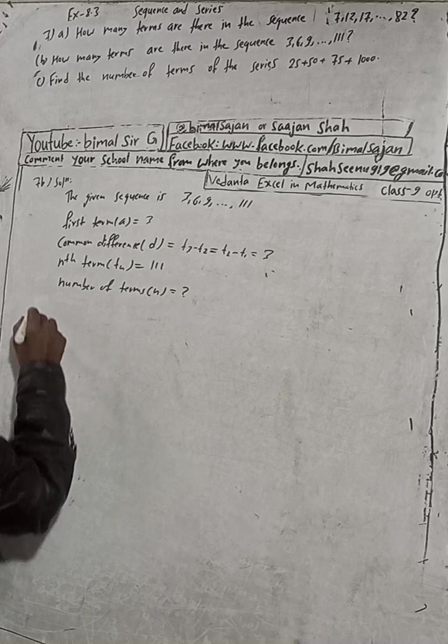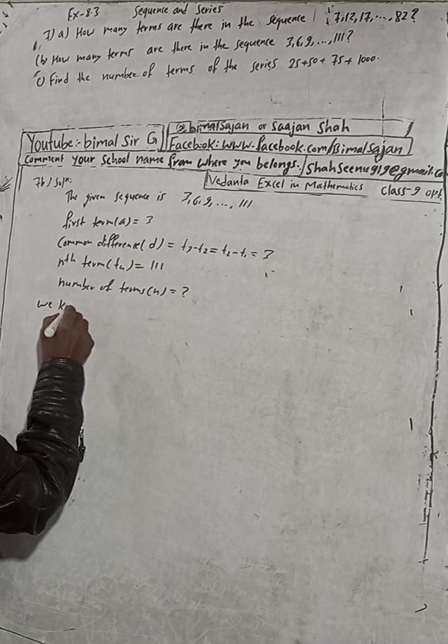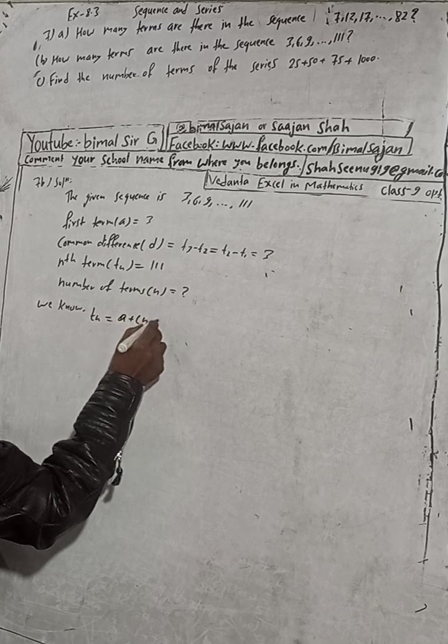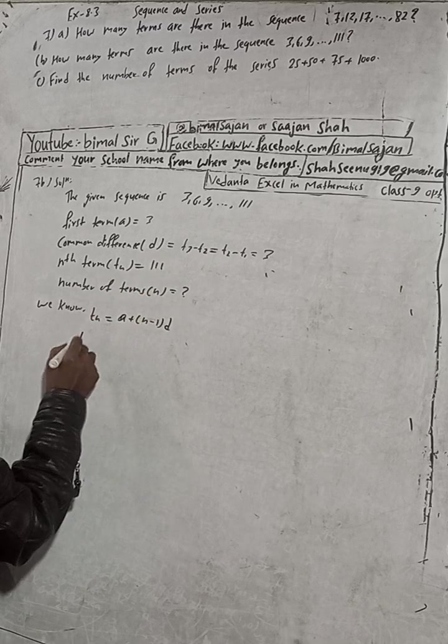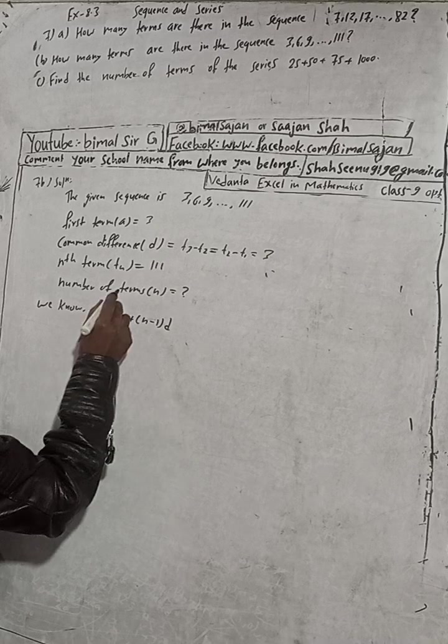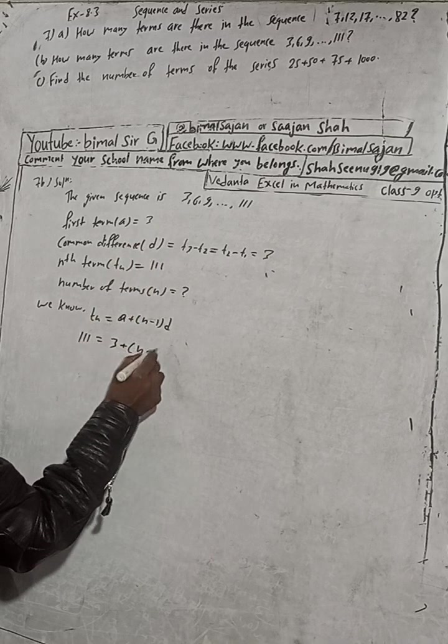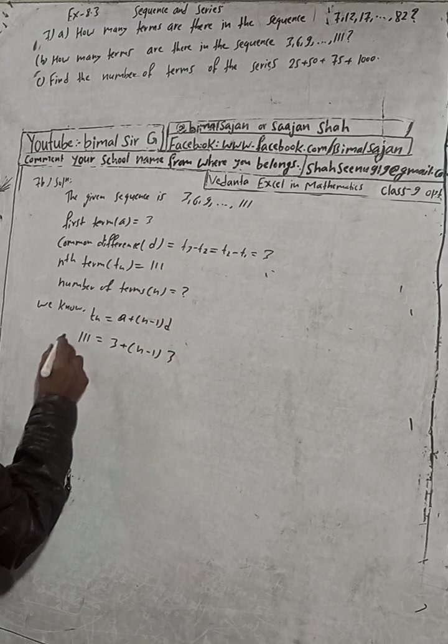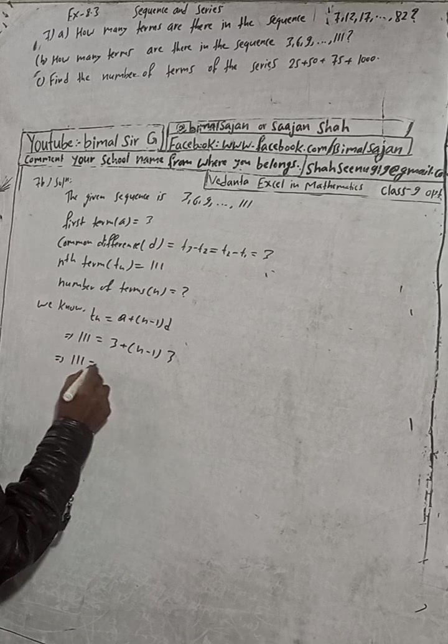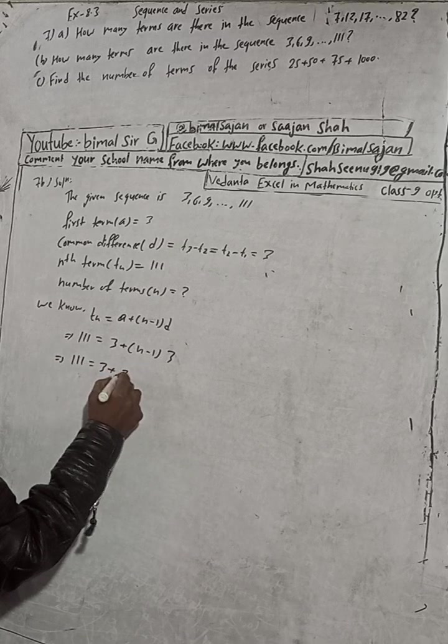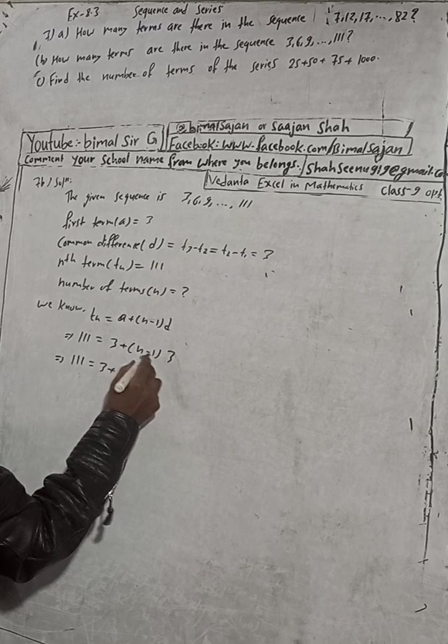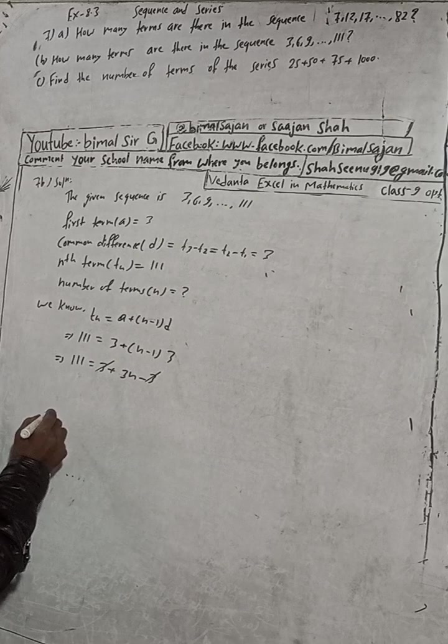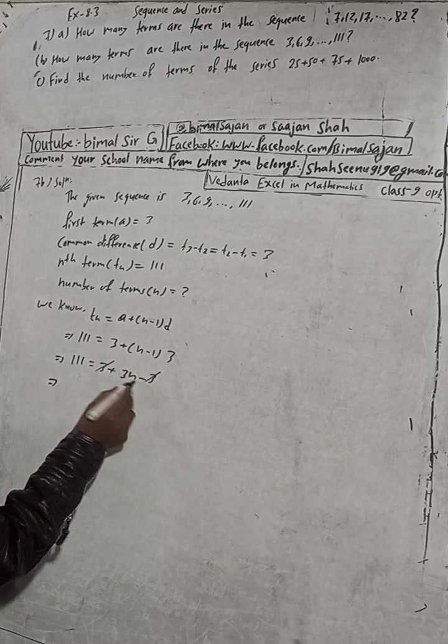The last term tn is going to be 111. We have to find n. We know tn formula is a plus n minus 1 into d. Tn is 111, a value is 3 plus n we don't know, and d value is 3. This implies 111 is equal to 3 plus 3n minus 3.